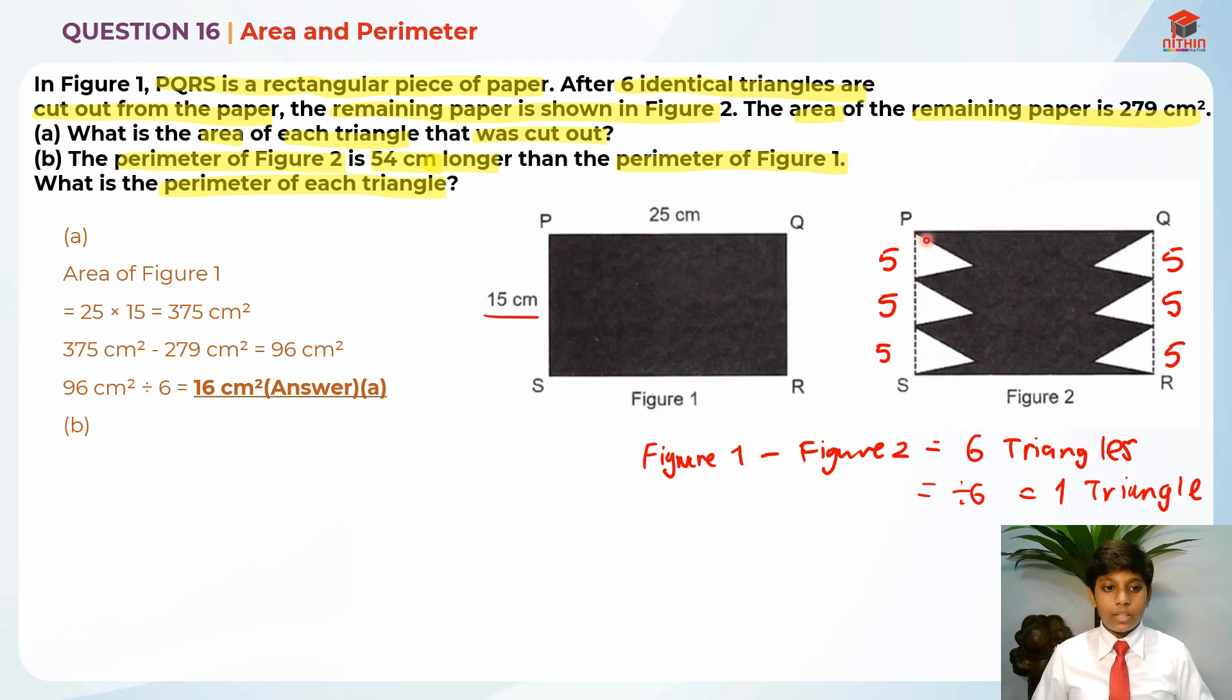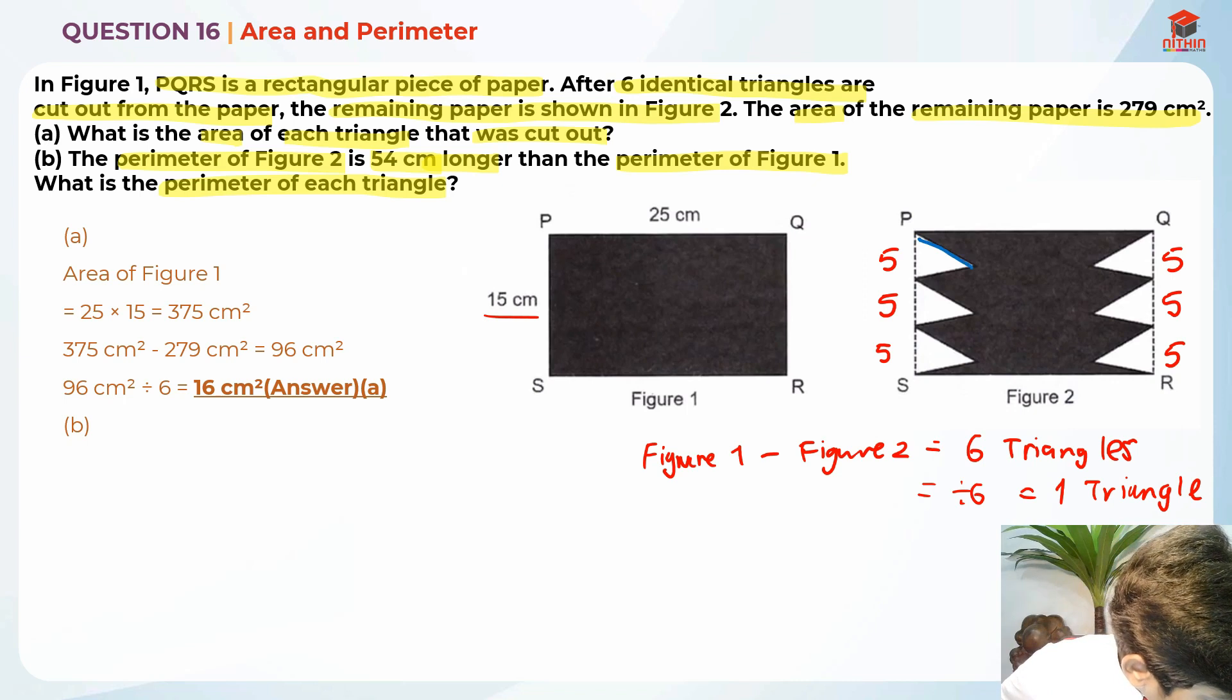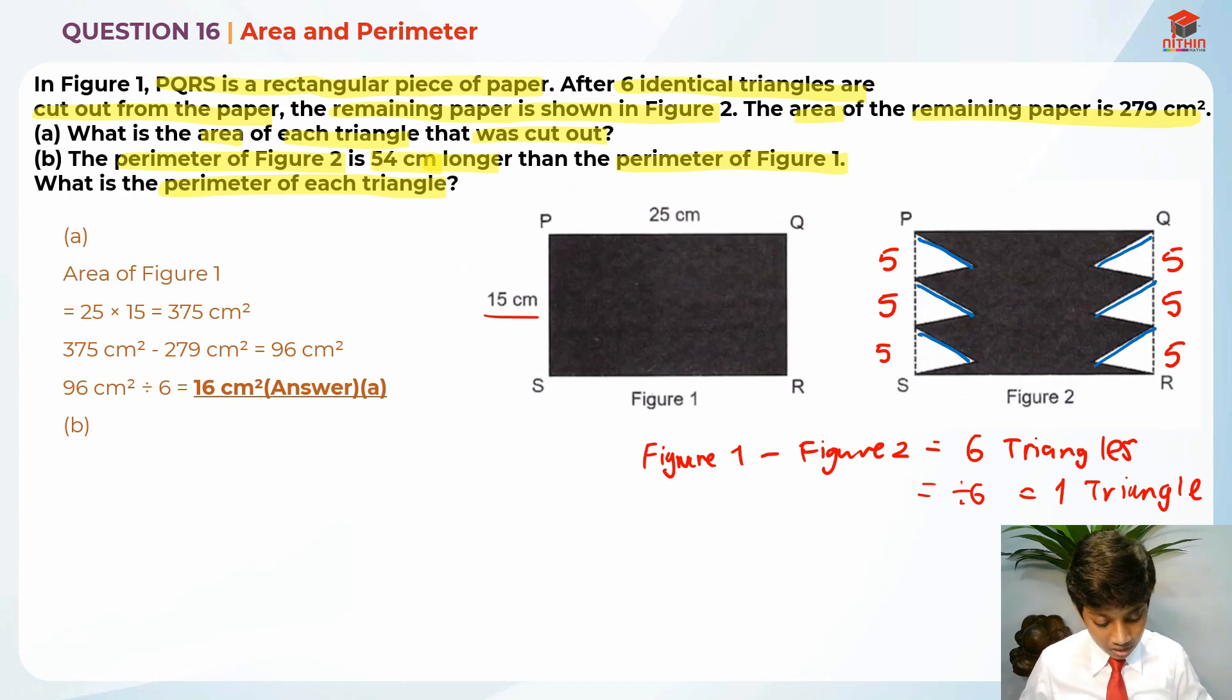In order to find the perimeter of each triangle, we need to find this line in blue, and we also need to know this line in green. But we do not know either of them. So what we should do first is minus off the length, so that we only have the triangles inner as the perimeter of the figure.